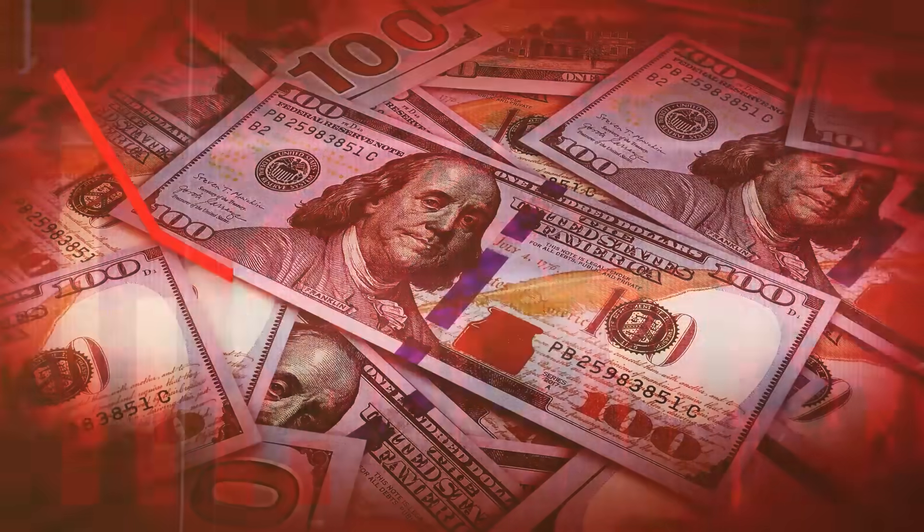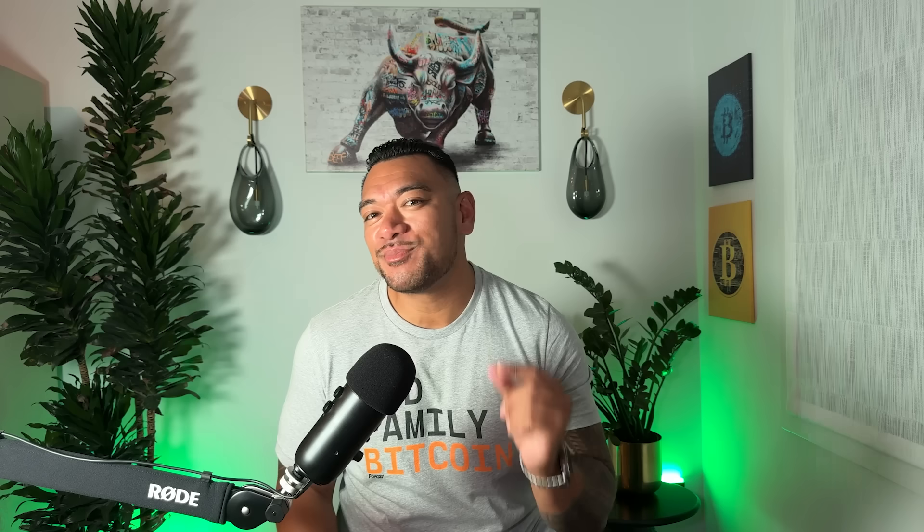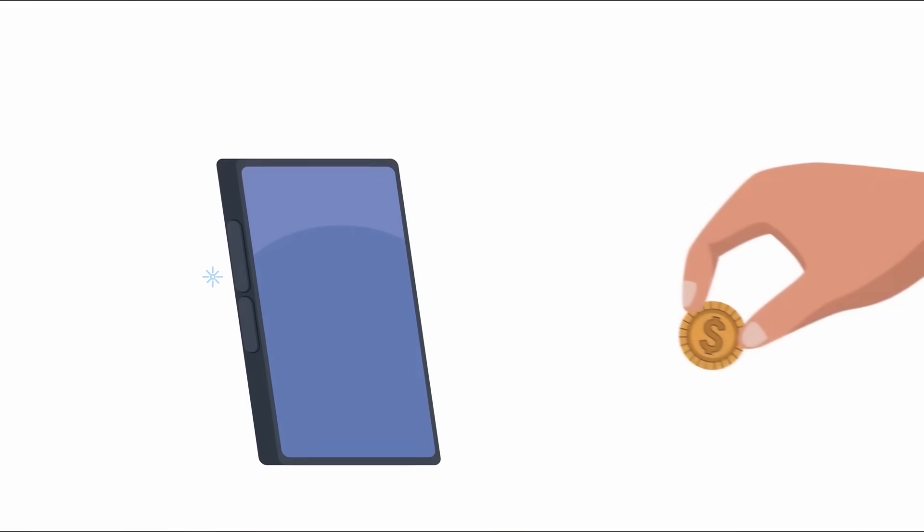Here's something deeper: in some countries, kids your age can't even open a bank account, or their parents' money loses value overnight because of inflation. Bitcoin gives people a way to protect their money no matter where they live. That's why millions of people around the world use it — not just to make a profit, but to have freedom: freedom to save, freedom to send money, freedom to take control of their future.